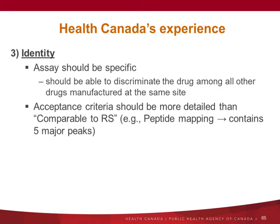For identity testing, what we see is sometimes the assay is not specific enough. Companies that manufacture monoclonal antibodies don't just manufacture one — they have several products. So they should be able to discriminate the drug among all other drugs manufactured at the same site. In terms of acceptance criteria for identity testing, it should be more detailed than just 'comparable to the reference standard.' If you use peptide mapping, you should provide the description — for example, 'contains the five major peaks.'